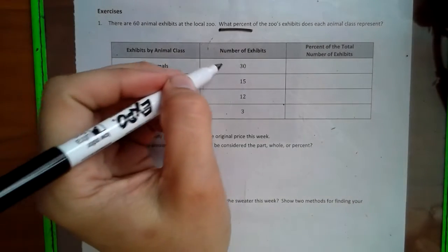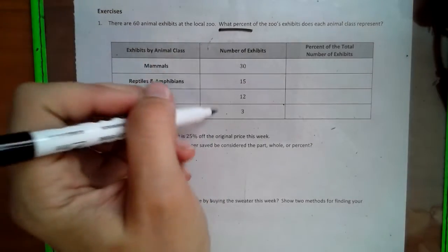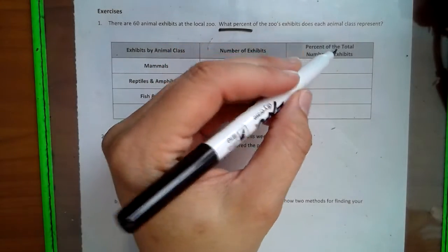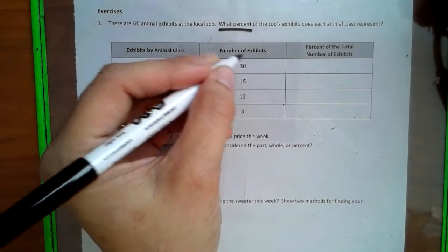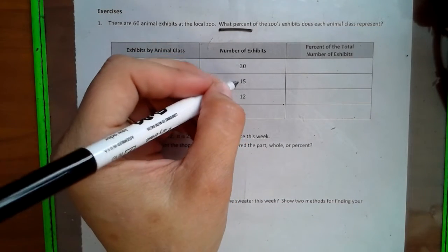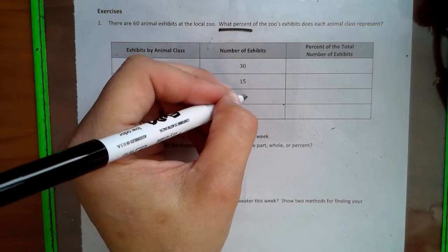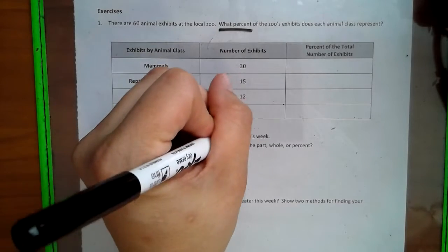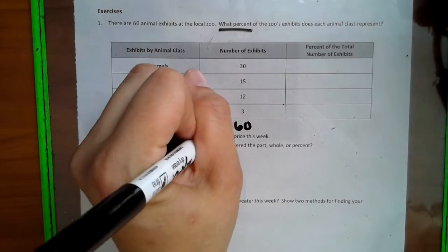So looking at each style of animal we have, we have to get the percent of the total. So we have 30 here, but we have to know the grand total. So we've got to add these up, 30, 40, 50, 55, 56, 57, 58, 59, 60. So our total is 60.